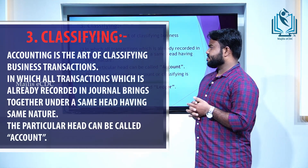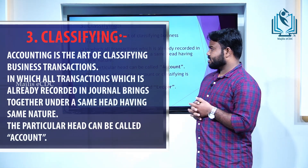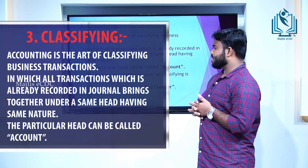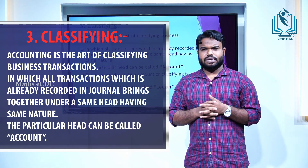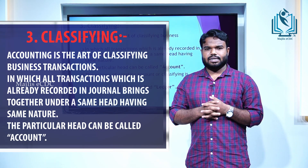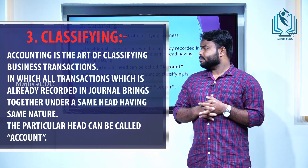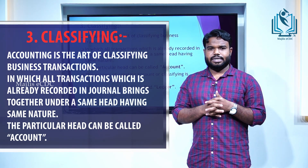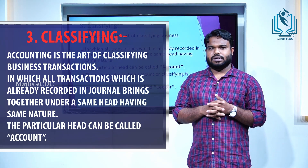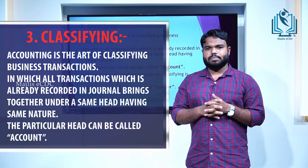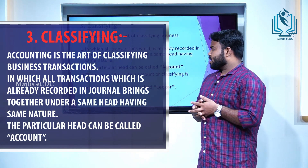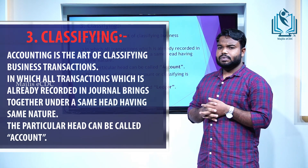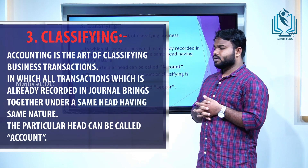The next process is classifying. Accounting is the art of classifying business transactions in which all transactions already recorded in the journal are brought together under the same head having the same nature. After recording, all recorded data should be further classified on the basis of their character. For example, all sales occurring in a particular period should come under the head sales account, and all purchases should come under the purchase account. The process of classifying is called posting, and the book used for posting is called ledger.